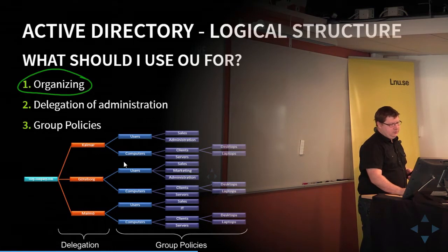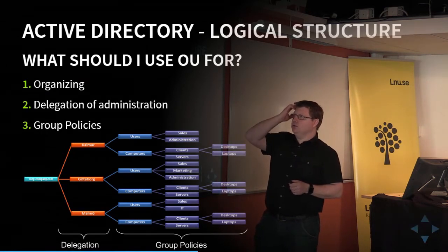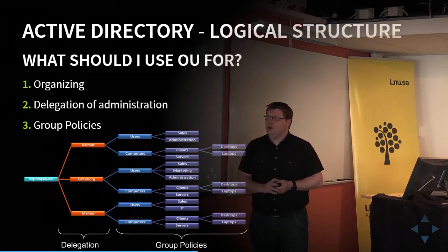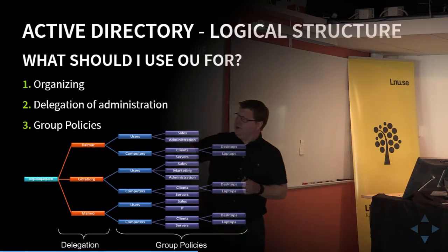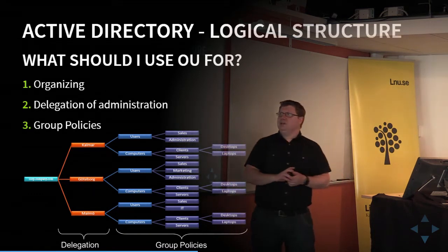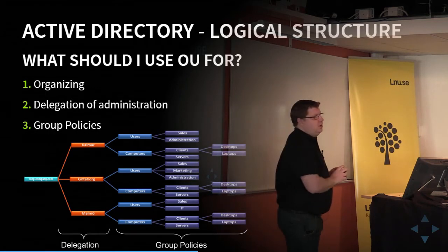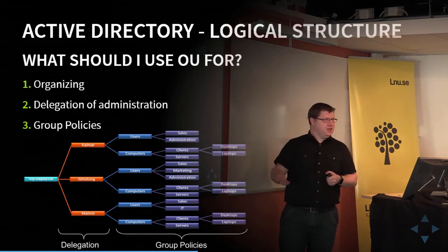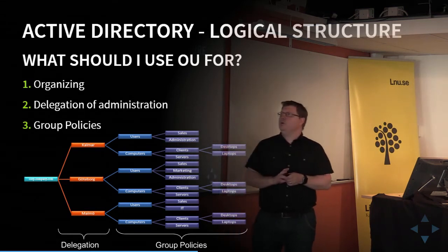There are some tweaks you can use. If I want a group policy applied to all the sales departments across different locations, I connect the GPO to each of those organizational units. A GPO can be connected to multiple OUs, so if I want to change something later I only change the GPO and it will be reflected on all the OUs it is connected to.